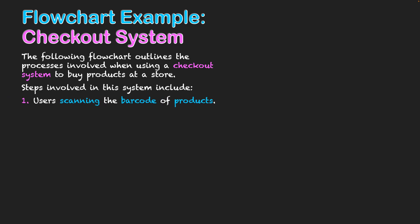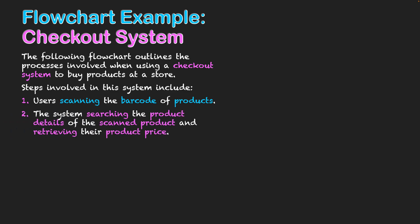Firstly, users are able to scan the barcodes of products in order to enter them into the system. Secondly, the system will search for product details based on the scanned product input and then retrieve the product price about the product that's stored on the system.